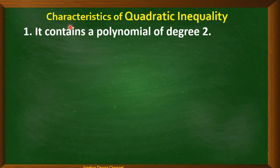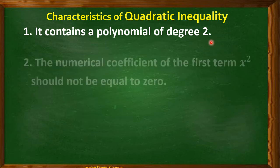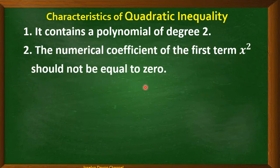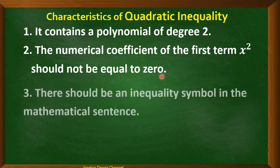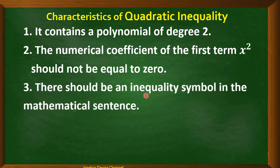You have to familiarize yourself with the characteristics of quadratic inequality. First, it contains a polynomial of degree 2, meaning the highest exponent of the variable is only 2. Next, the numerical coefficient of the first term x² should not be equal to 0 — if it is 0, it becomes linear. And last, there should be an inequality symbol in the mathematical sentence. All of these characteristics qualify a sentence as a quadratic inequality.